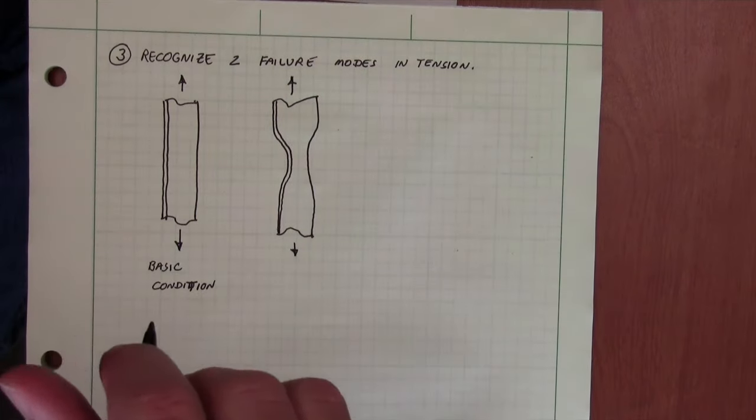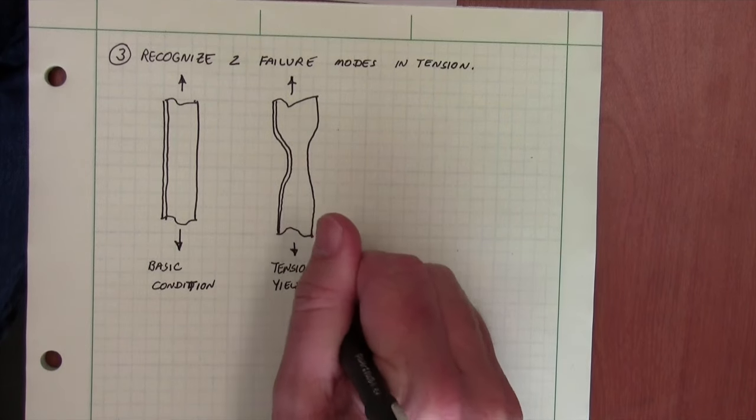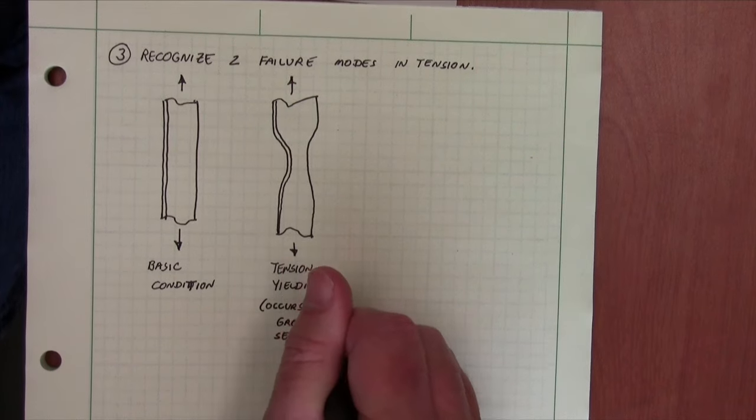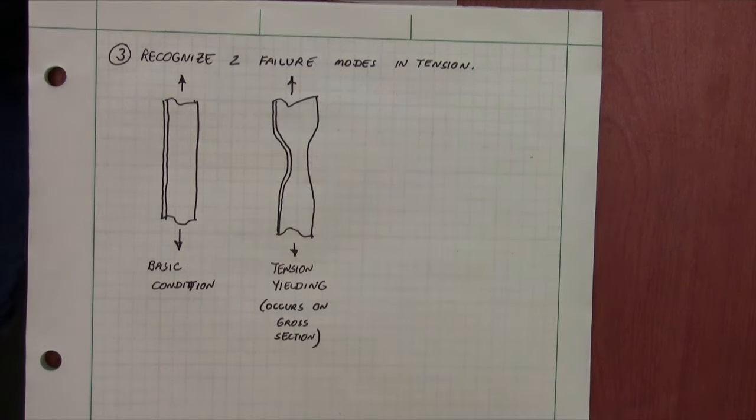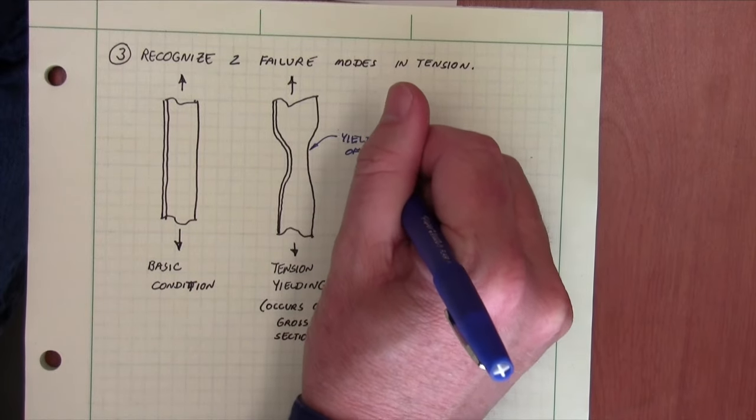And the yielding occurs on the overall section. We call this the gross section. This is the cross-sectional area of the member. So tension yielding occurs on what we refer to as the gross or the cross-sectional area of the member.